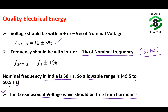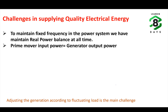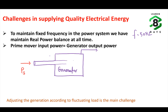What are the basic challenges in supplying quality electrical energy? To maintain a fixed frequency of 50 Hz, we have to maintain real power balance in the power system at all times. The mechanical input (shaft power) coming from the prime mover should always balance the electrical power output. If the mechanical input Ps equals the electrical output Pe at all times, the frequency will remain at 50 Hz.